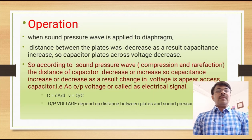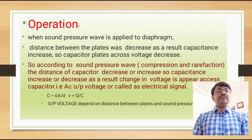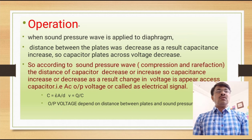Working of capacitor microphone: we know that sound waves are applied and converted into an electrical signal. When the sound pressure wave is applied to the diaphragm, the distance between the plates of the capacitor decreases. As a result, capacitance increases, so the voltage across the two plates of the capacitor decreases.